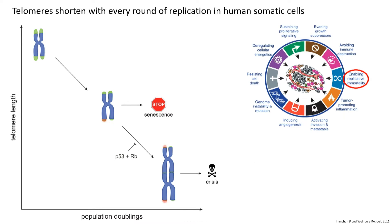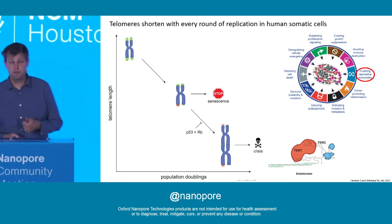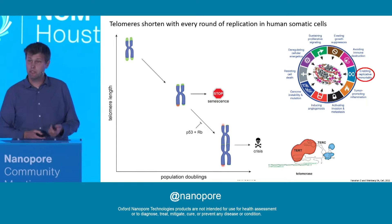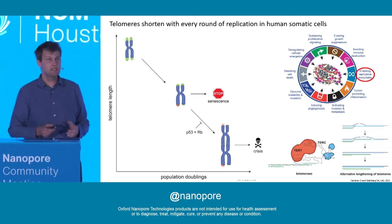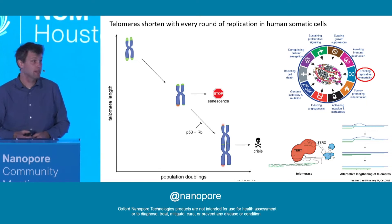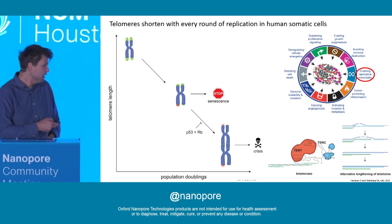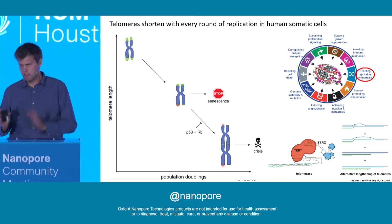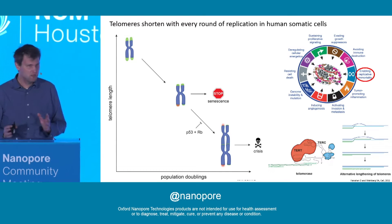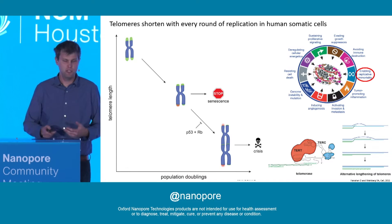Cancer cells have to solve the end replication problem in order to achieve replicative immortality, and they do so by activating telomere maintenance mechanisms. Either they activate the reverse transcriptase telomerase, which catalytically adds telomeric repeats to chromosome ends, or they use the cellular recombination machinery in a process called alternative lengthening of telomeres, or ALT. The majority of cancer cells use telomerase, as do stem cells, while only 10 to 15 percent of all cancers use ALT.